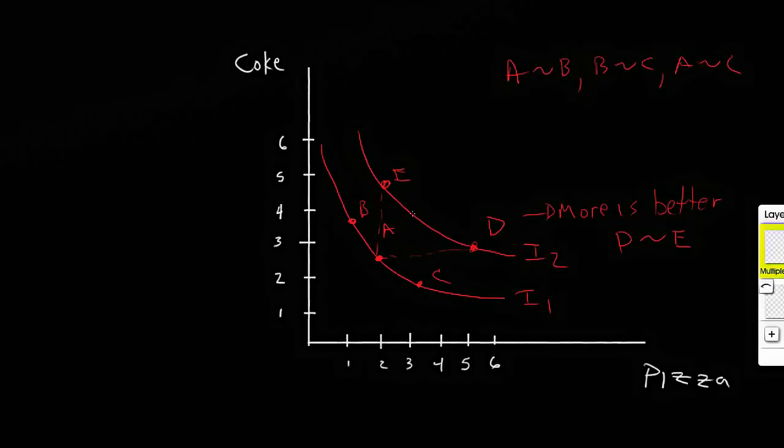So if I drew this third indifference curve here, I3, and maybe I put point F up here, I would note that F is preferred to E, and of course E is preferred to A or B or C. Therefore F is also preferred to A by the transitive property. And what we show here is then that being on this highest indifference curve I3 is preferred to being on any point in I2, which is preferred to being at any point on I1.